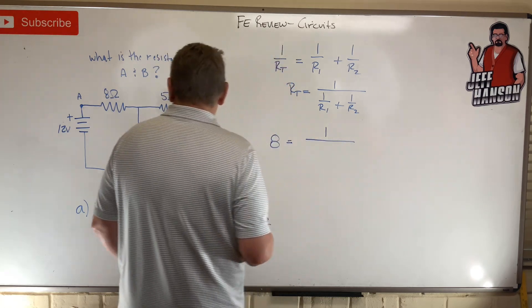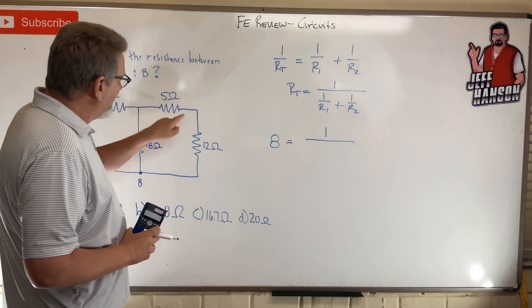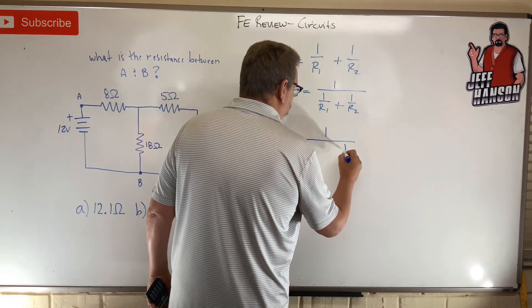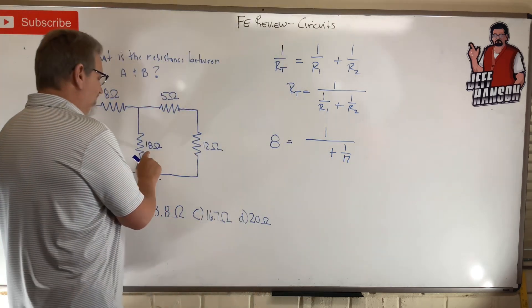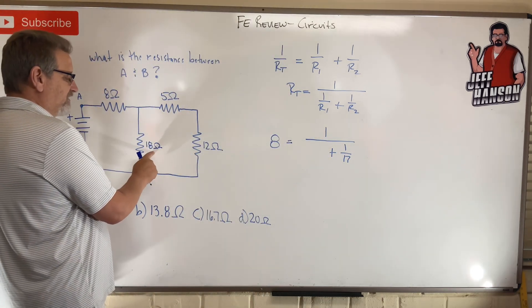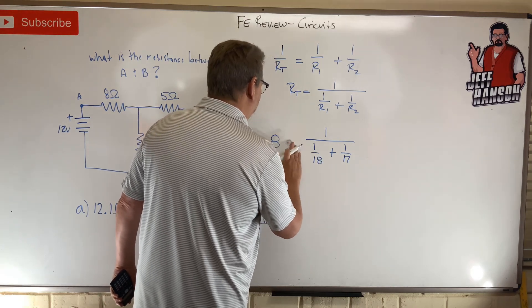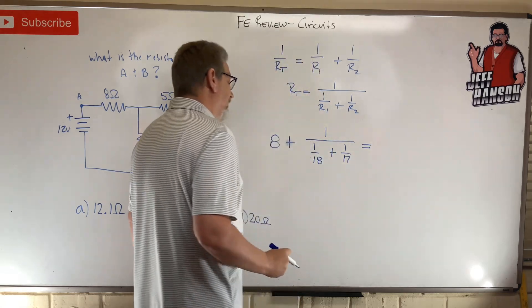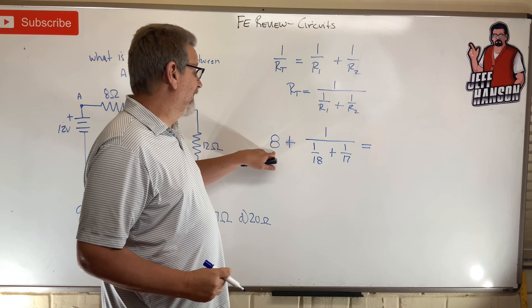The total resistance on this branch is going to be 5 plus 12, that's 17. So there's one over 17 - that's the second one. The first one is just one over 18. And that's not an equals, that's a plus, there's your equals. This one I didn't have to transform because it's not in parallel.